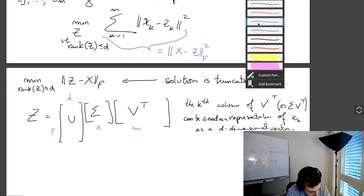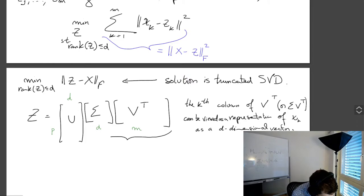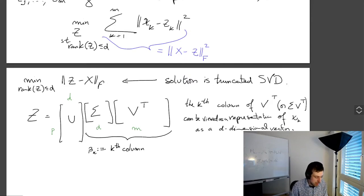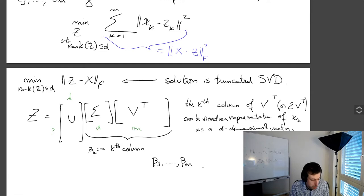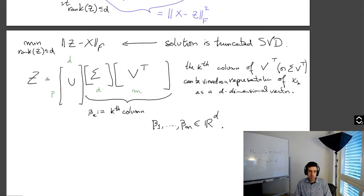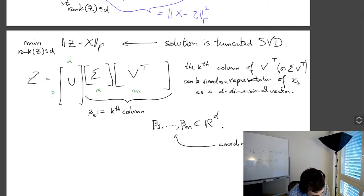Let me be more precise. Let beta_k be the k-th column of sigma V transpose. So beta_1 through beta_m correspond to each of the data points, and they are all d-dimensional. These are effectively the coordinates for PCA. Depending on what you're doing, you might want to scale them with sigma or not — scaling the coordinates would just be like making the north-south stretch or east-west stretch in the map of Europe.